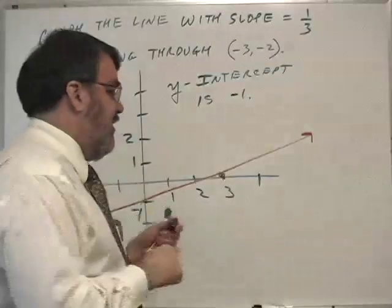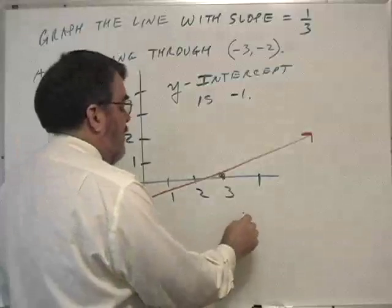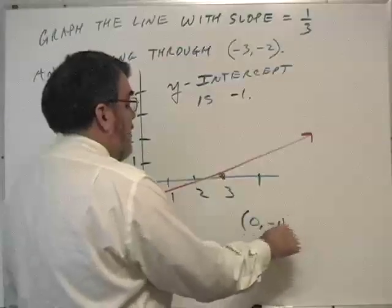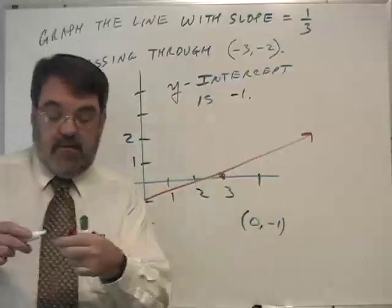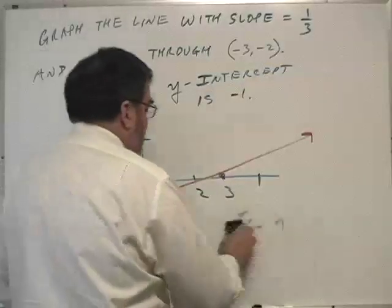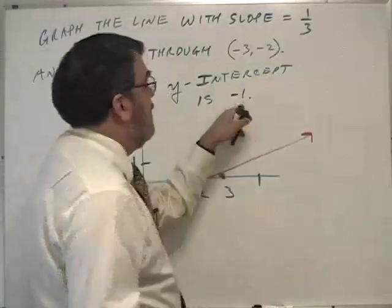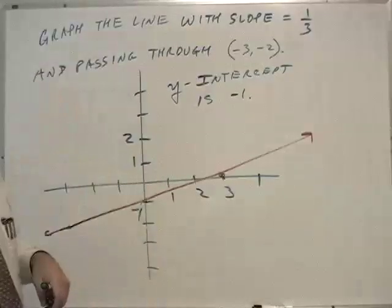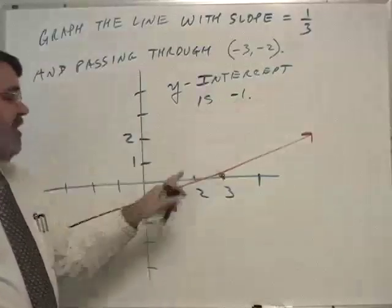A lot of textbooks, a lot of people who teach will say the y-intercept is at the point (0, -1), and that's obviously correct. To me it doesn't matter. Y-intercept means that it's crossing the y-axis, in this case at -1.